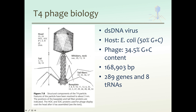What's also interesting about the genome of T4 is that although it resides in a host, E. coli, that has 50% GC content, the GC content of its genome is actually only 34.5%. That means the majority of its genome is made up of A's and T's instead of G's and C's.